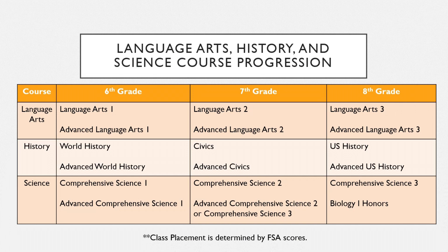First, we'll talk through the course progression for language arts, history, and science because they have the most basic course progressions. Every student in 6th, 7th, and 8th will have to take a course in each of those categories. As a 6th grader for language arts, you have the option of Language Arts 1 or Advanced Language Arts 1. For history, your options are World History or Advanced World History. For science, it's Comprehensive Science 1 or Advanced Comprehensive Science 1.